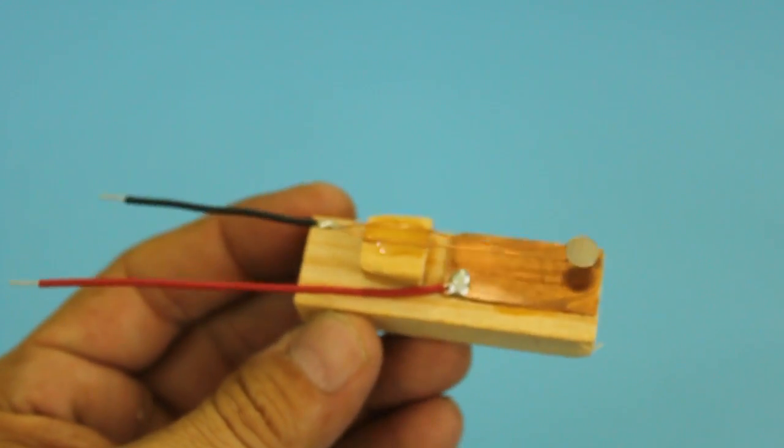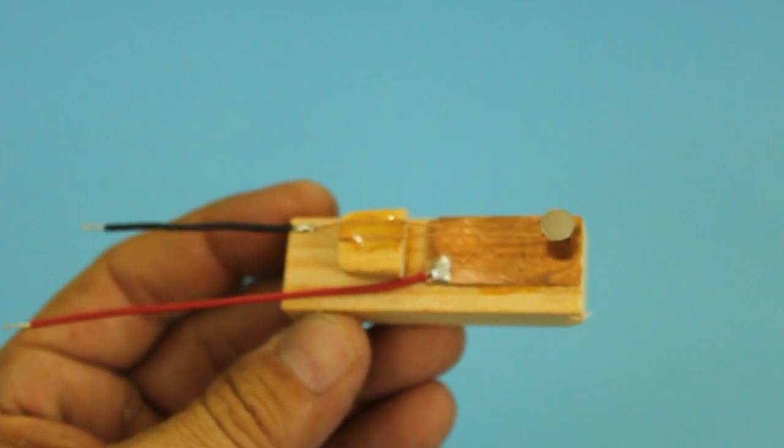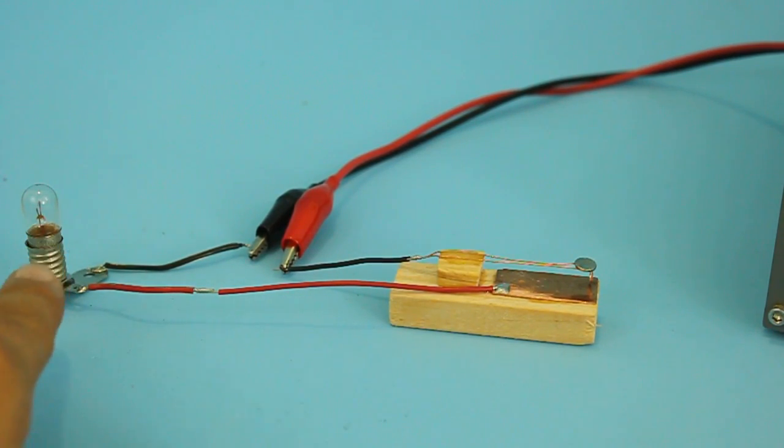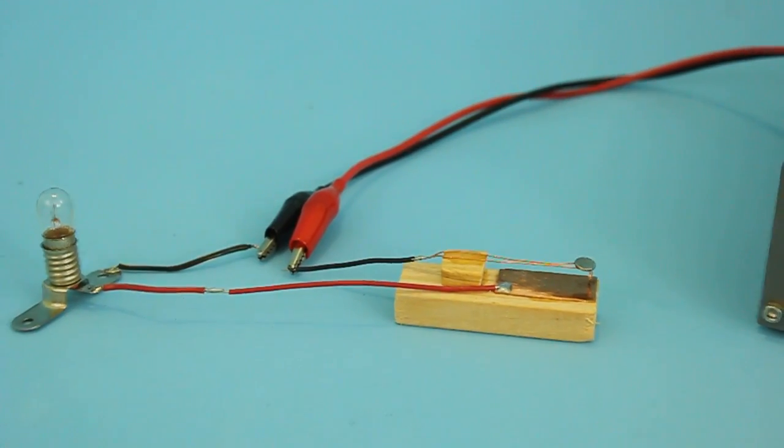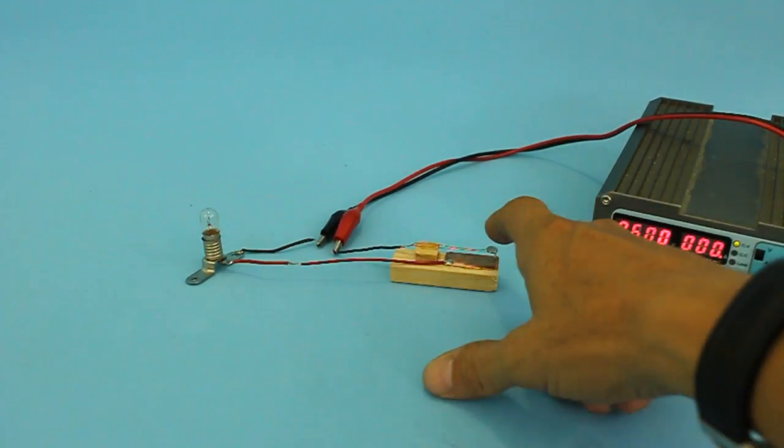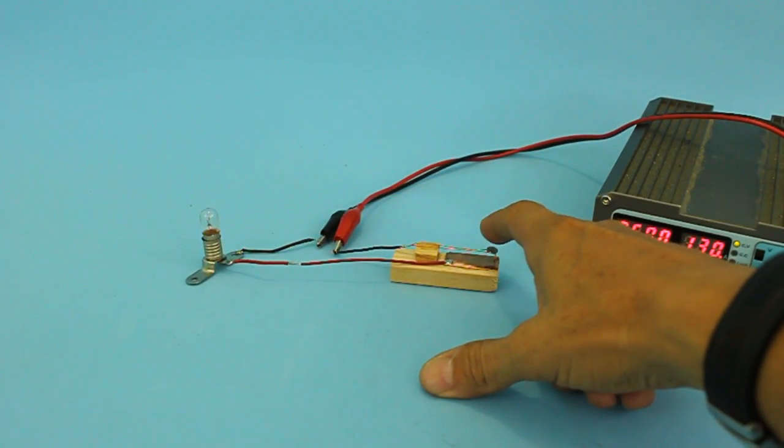Let's see how our switch performs. The magnetic switch is connected to this small incandescent lamp and to our power supply. As we can see when contact is made the lamp is turned on.